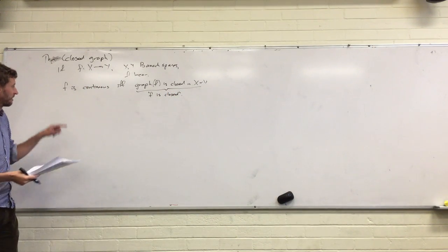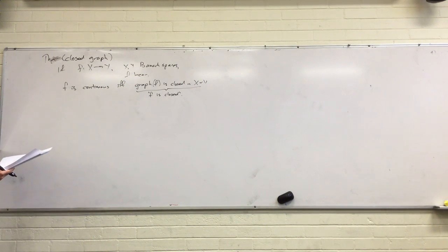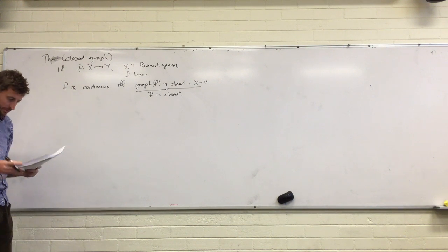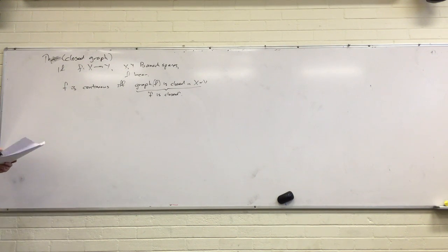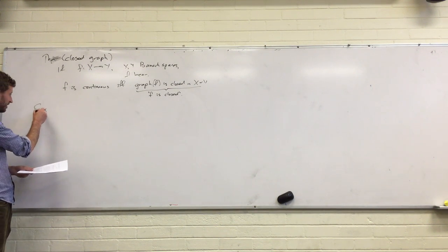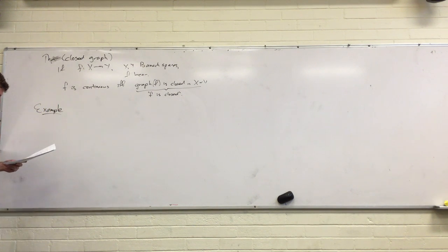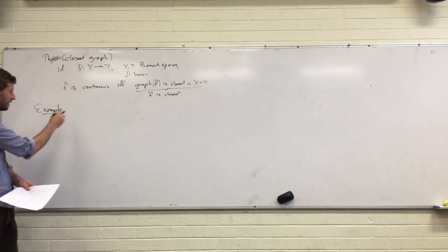One direction here is really obvious: if f is continuous and the graph is closed, that's just a fact about topological spaces, and the inverse is the thing that you use if you're using the bounded inverse theorem. And then we gave this really cheap proof of the closed graph theorem. Let's do one more example application of it, which is similarly maybe feels a bit cheap.